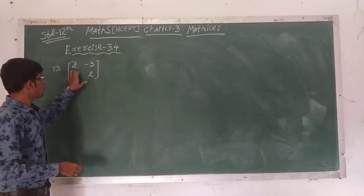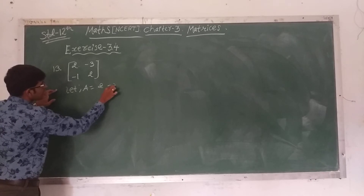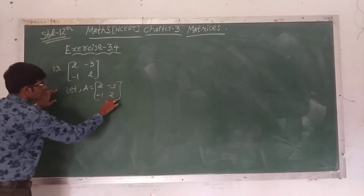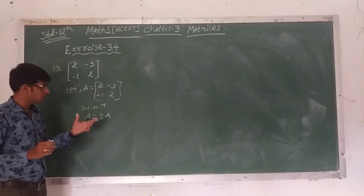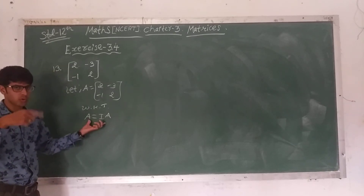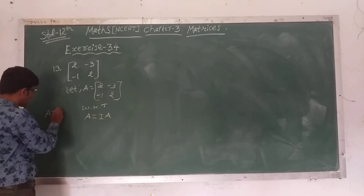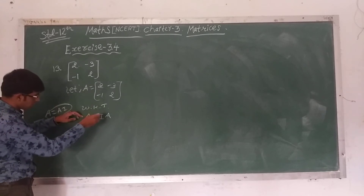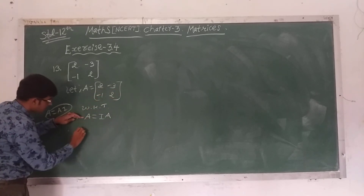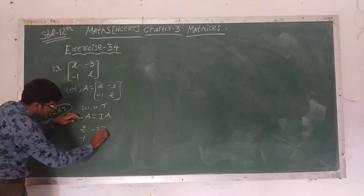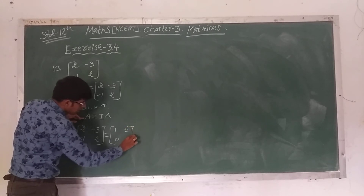Next, question number 13: matrix [2, -3; -1, 2]. Let A equal to [2, -3; -1, 2]. We know that A equals I times A, but for row and column operations we have to write A equals A times I. Keep this in mind. The value of A is [2, -3; -1, 2] equals [1, 0; 0, 1] times A.